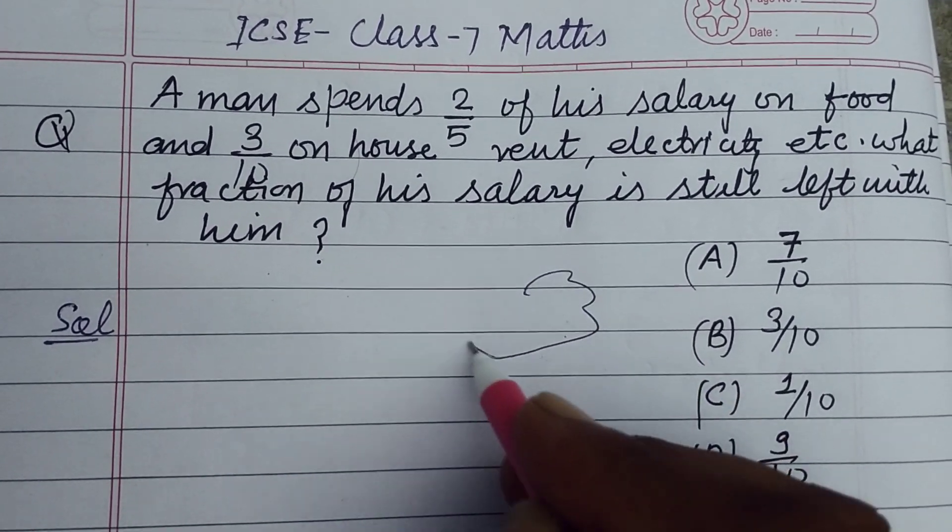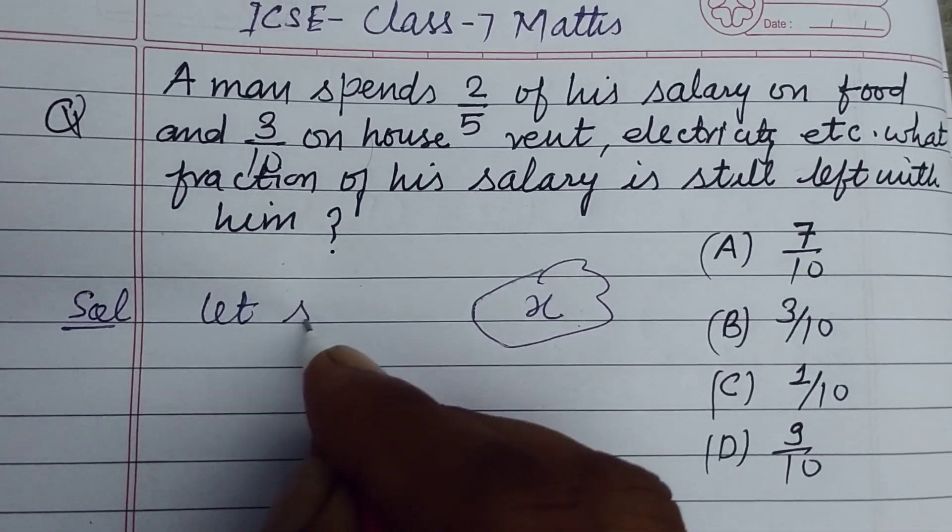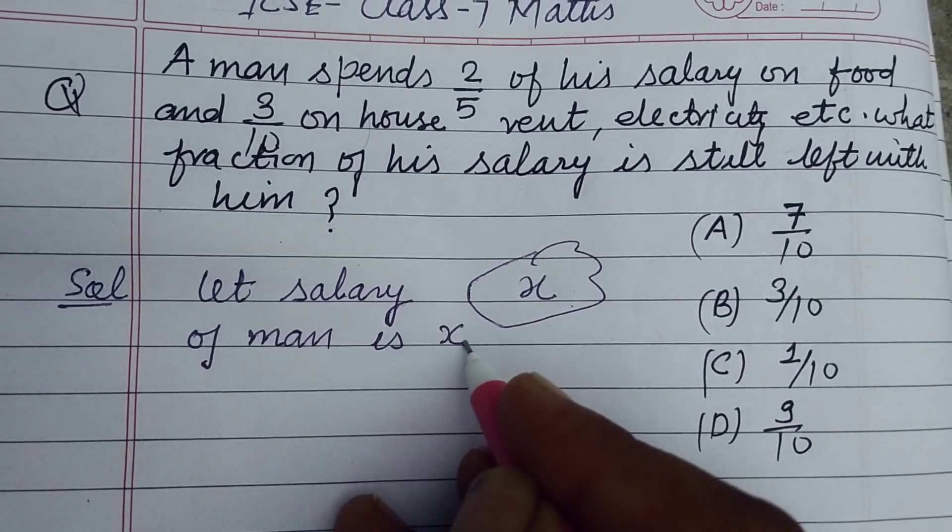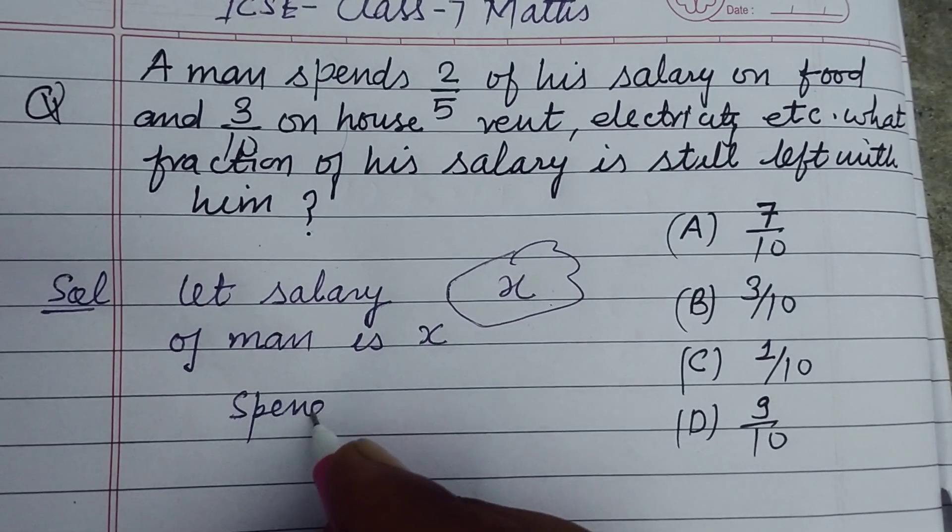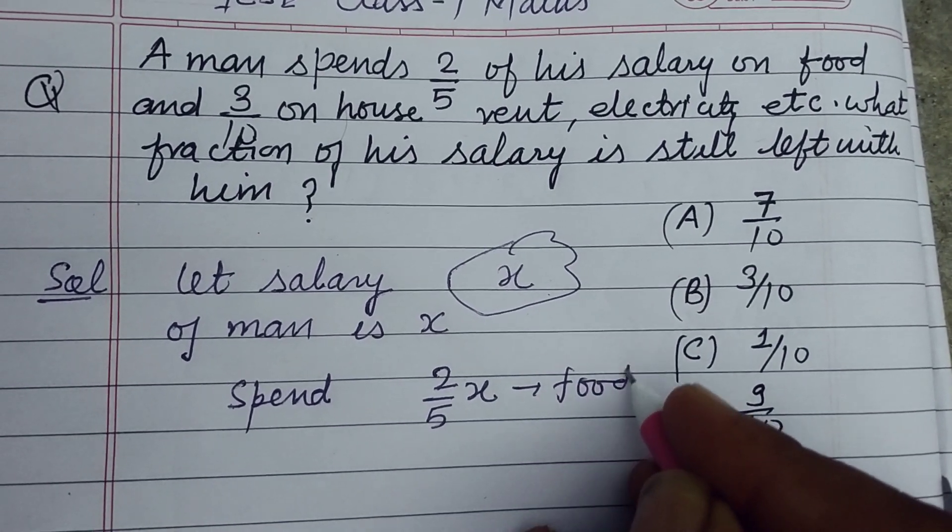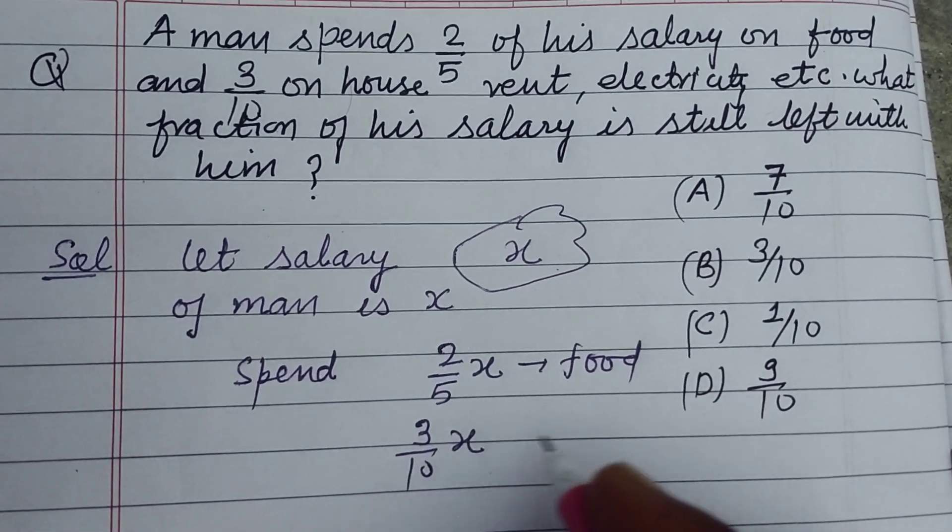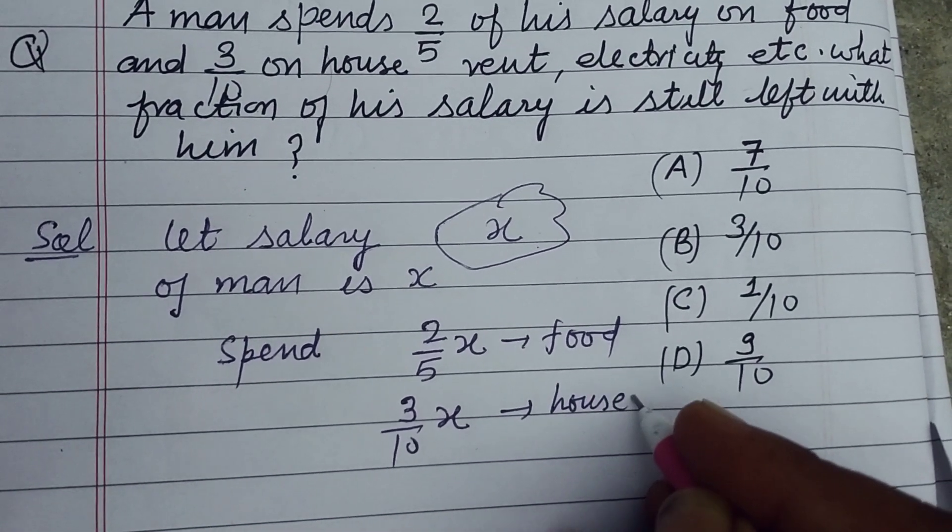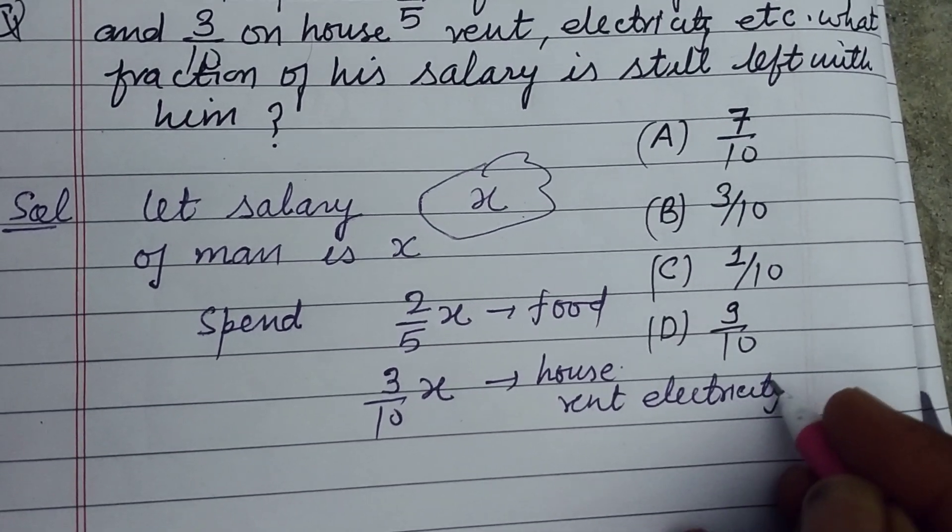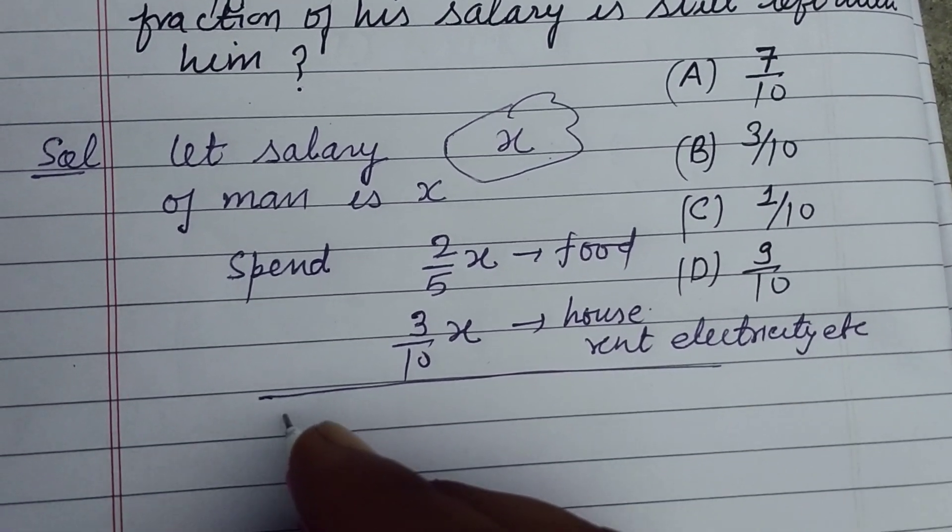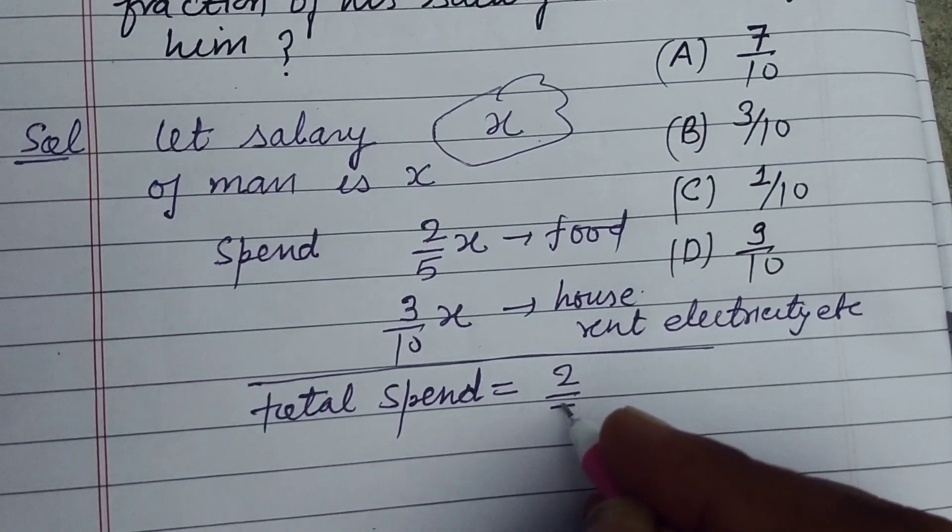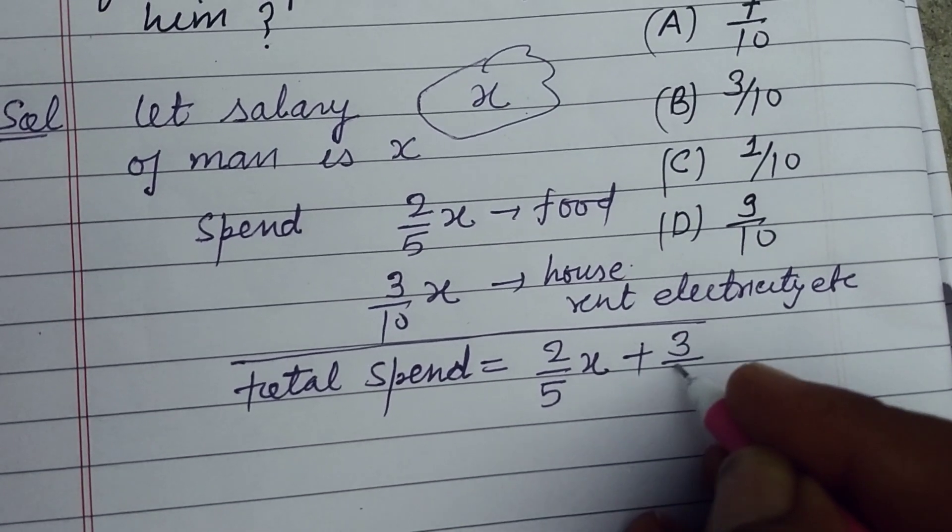So student, let his salary is x. Let salary of man is x. Spend 2 by 5 into x on food, 3 by 10 x on house rent, electricity, etc.